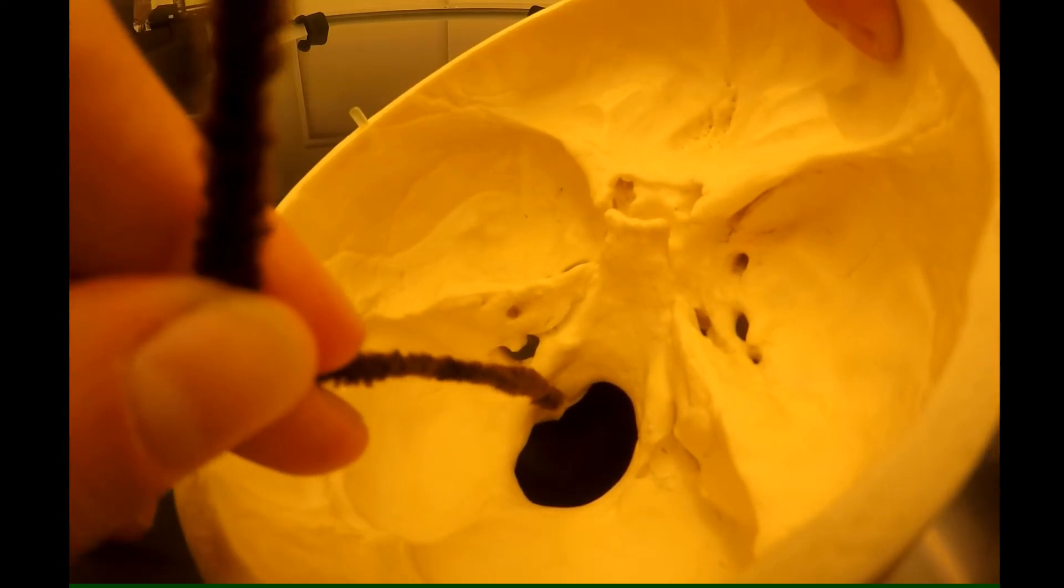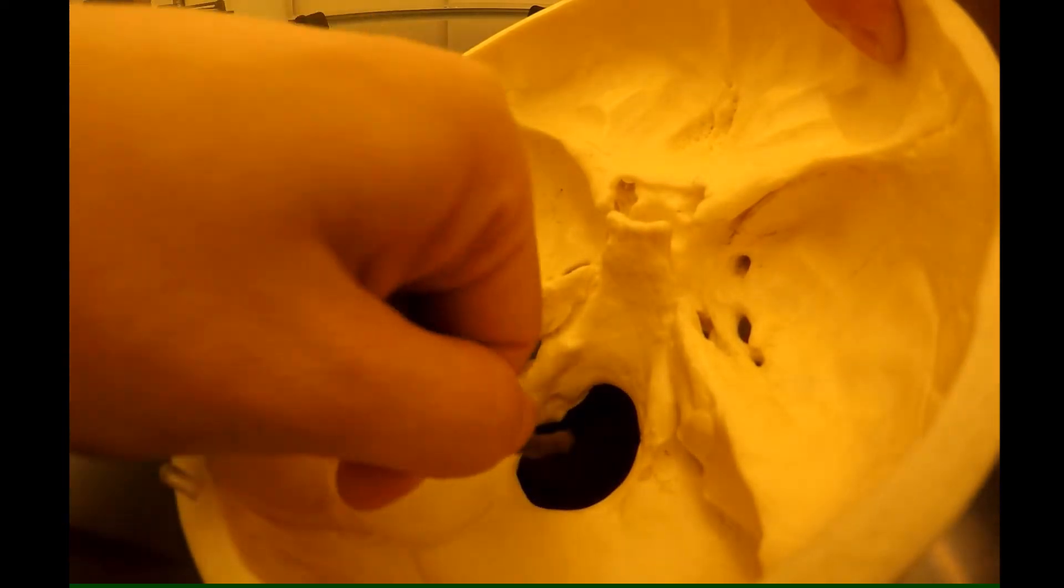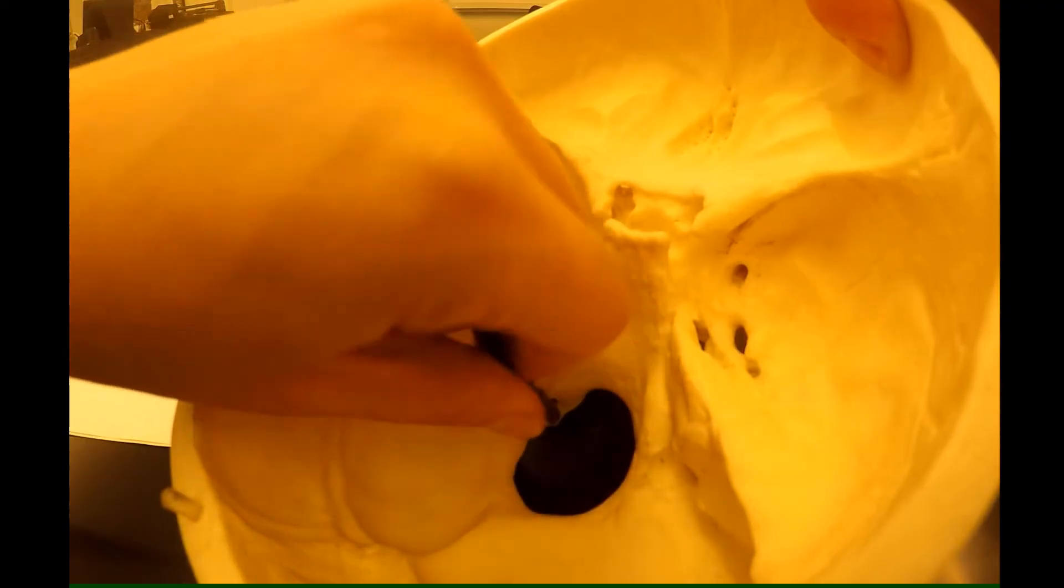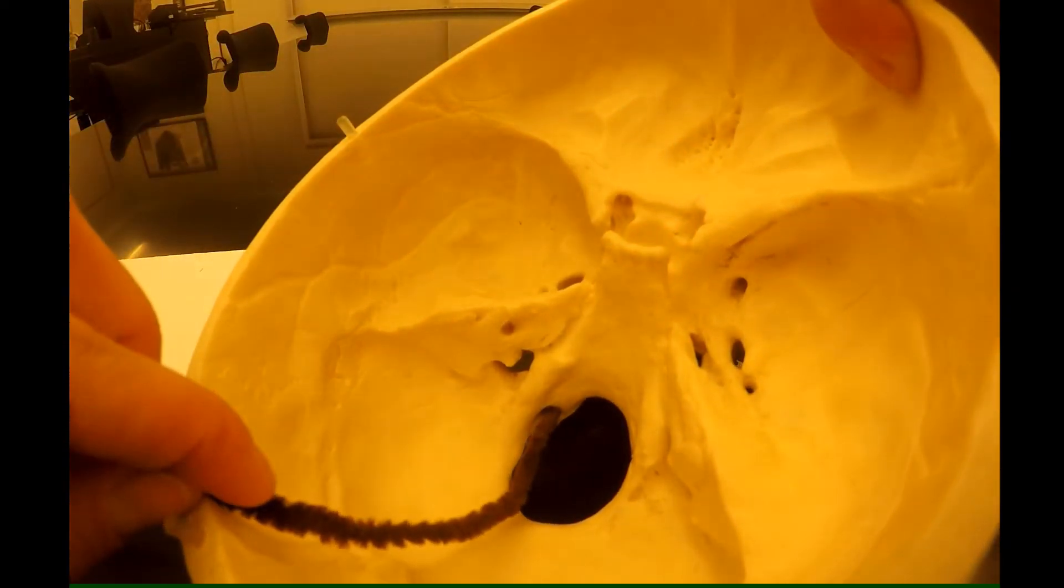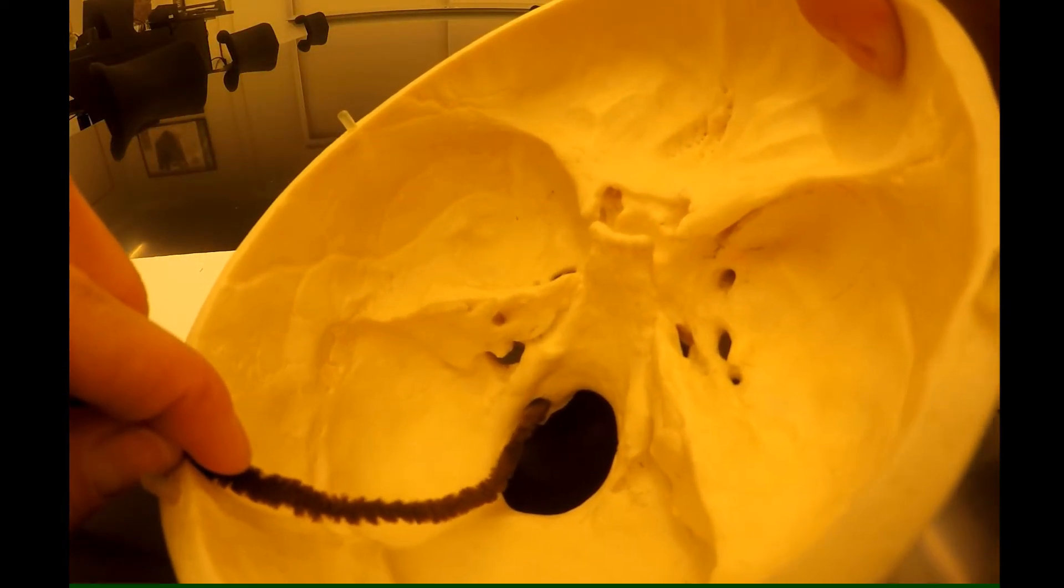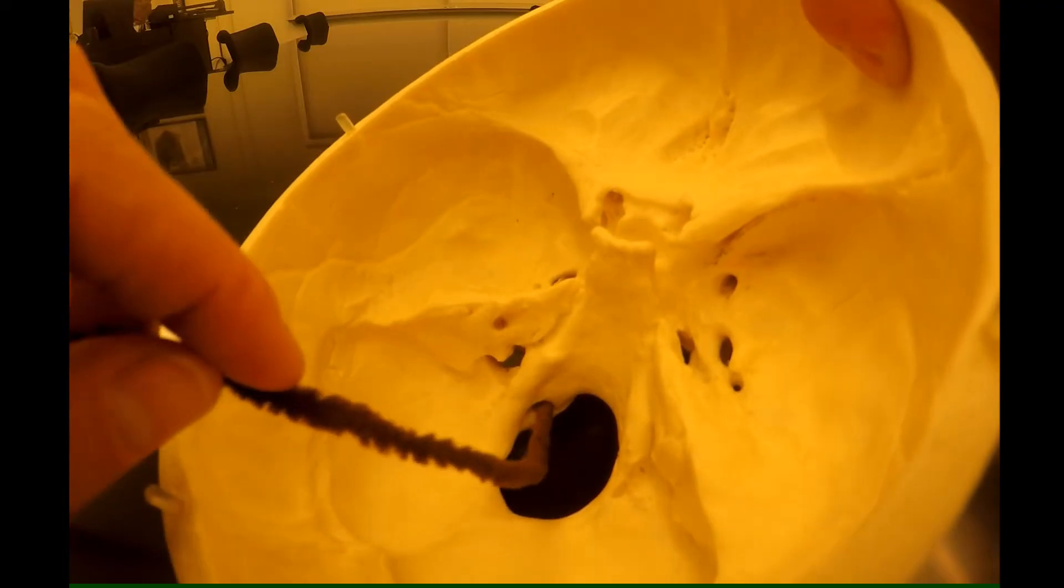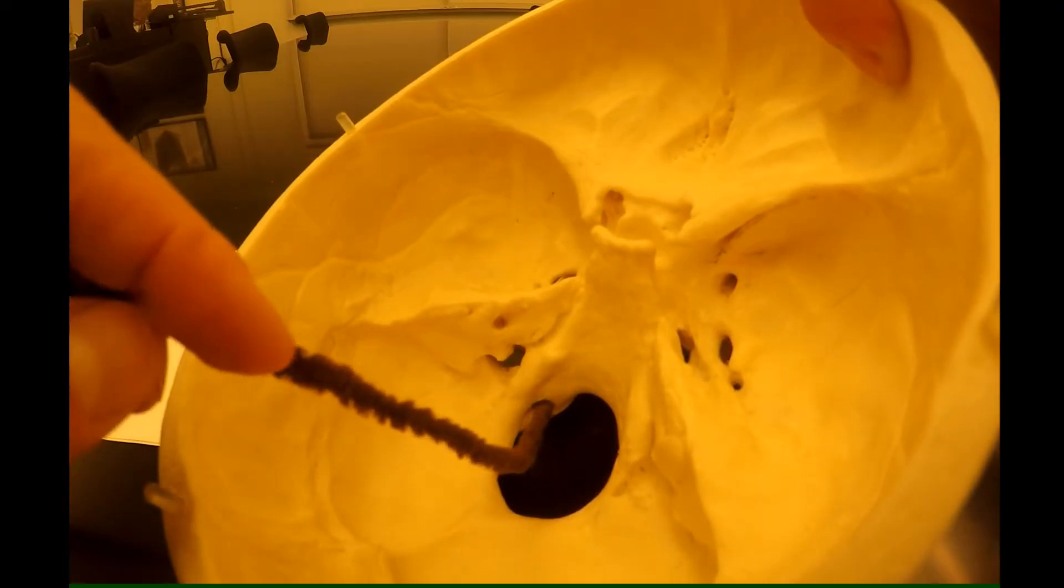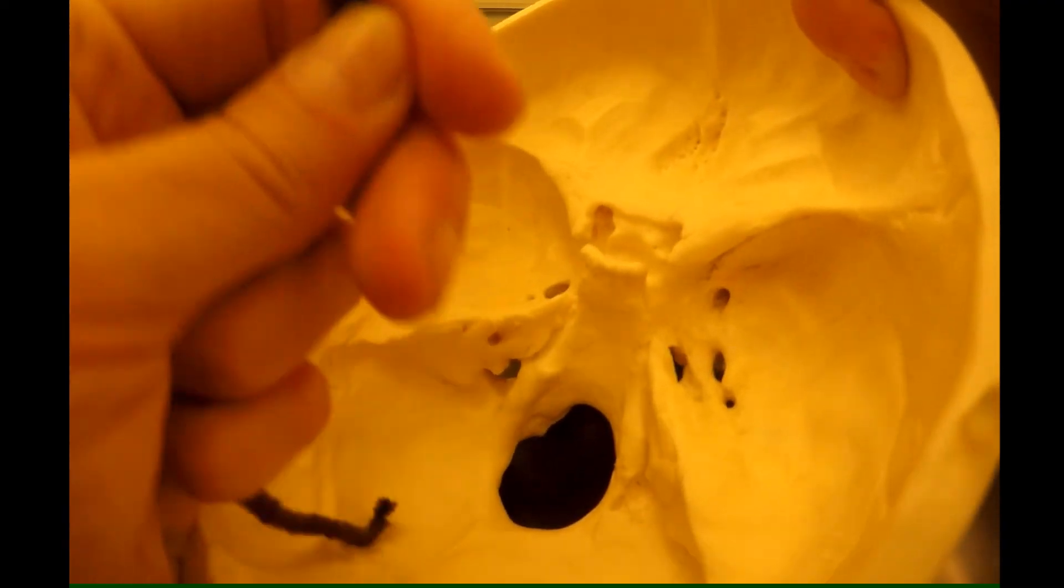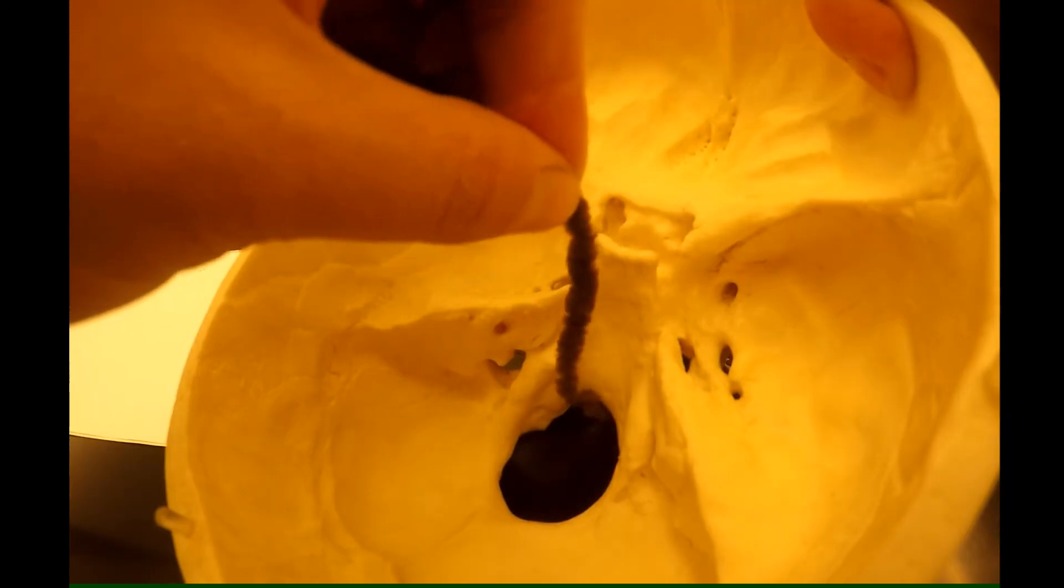Even further down the mountain is this hole on the side, which is your hypoglossal canal, right around the rim of the biggest hole, which is your foramen magnum.